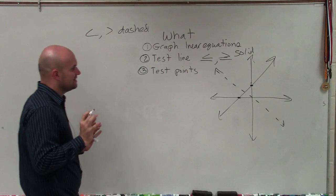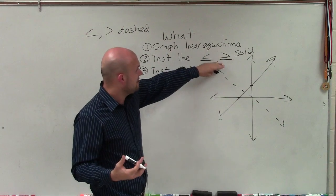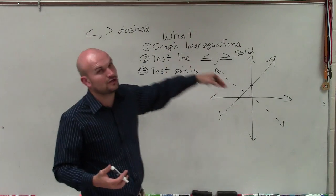As far as identifying test points, I think the easiest is just looking at your problem. If you have this, you know you're going to graph a solid line. If you have less than or greater than, then you're going to graph a dashed line.